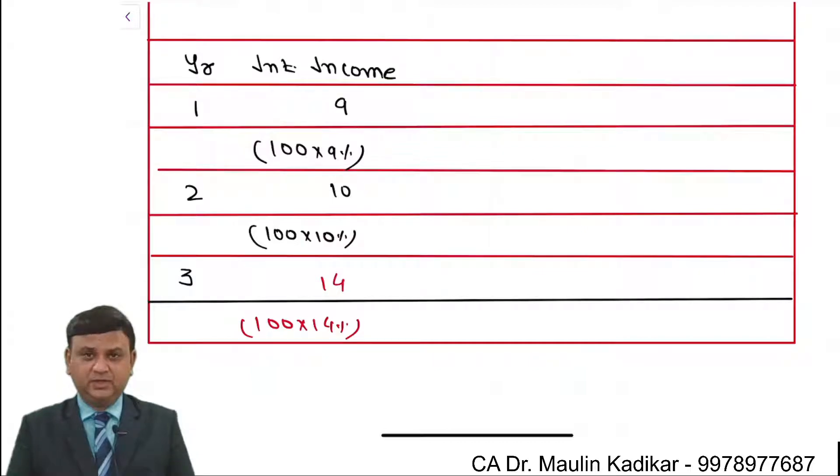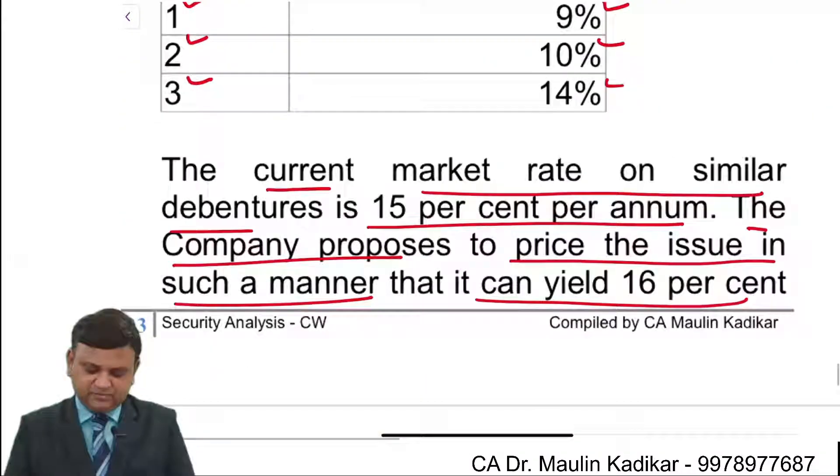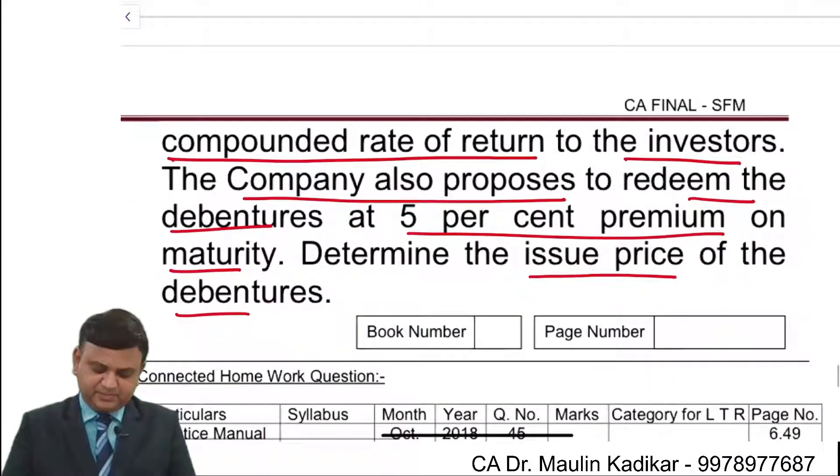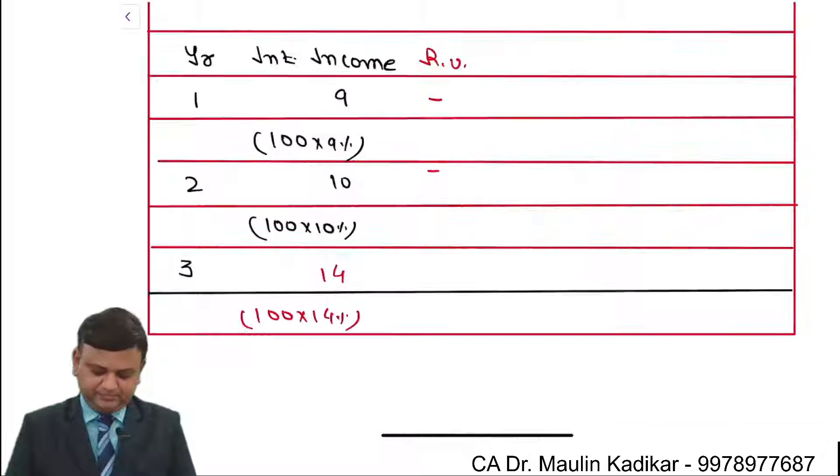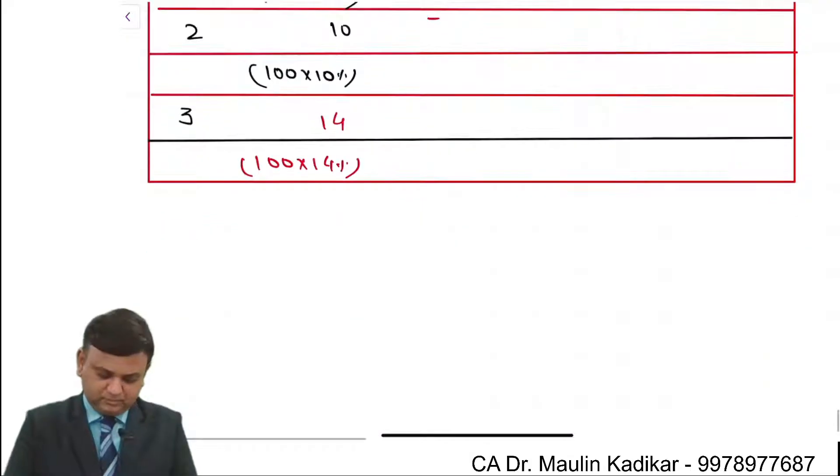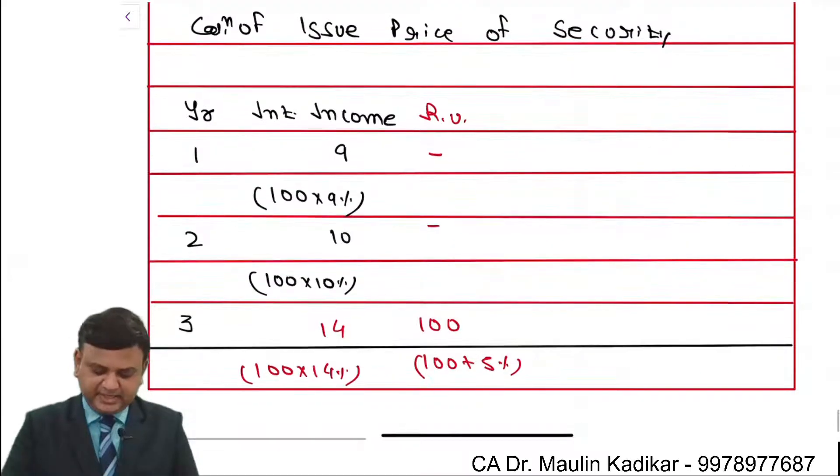Then at the end of the 3rd year we will receive the redemption value. It has been given in the question that the redemption will be at 5% premium. So against 100, investor will get 105. So taking into account the interest income and redemption value, we will compute the net cash flow.